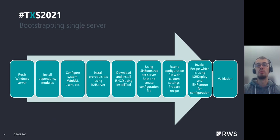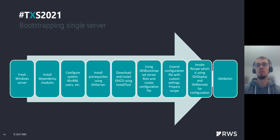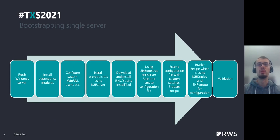The next step is downloading and installing each CD using the install tool. With ISHBootstrap on the local server, we set the server role — which defines what this server should be, like front-end, back-end, or everything on one box — and also create a configuration file for the recipes. The next step is extending the configuration file with some custom settings, for example integrations with PoolParty or with Tridion Sites.